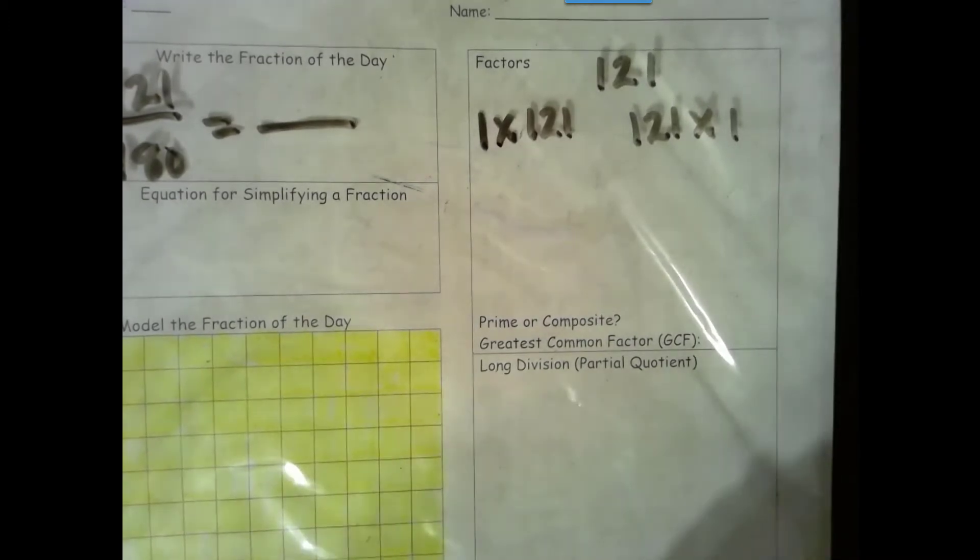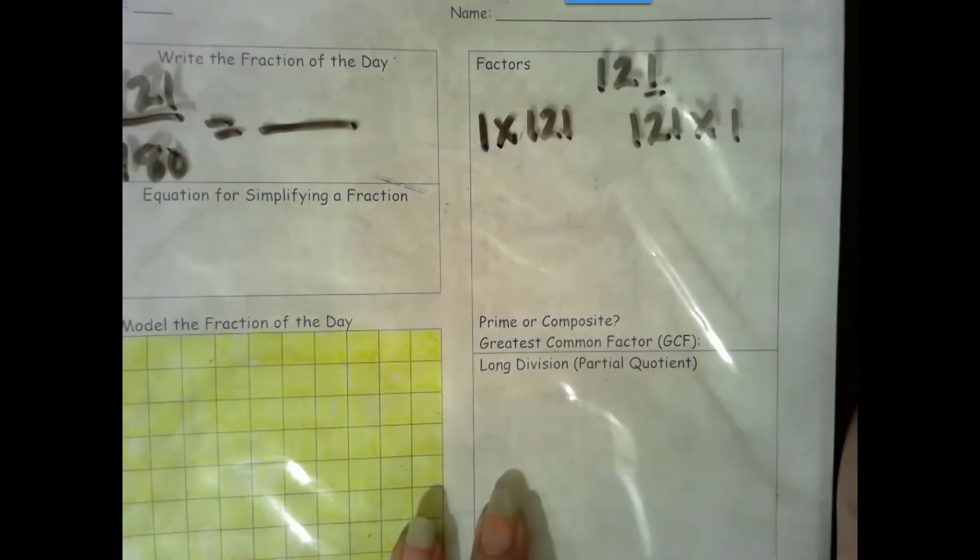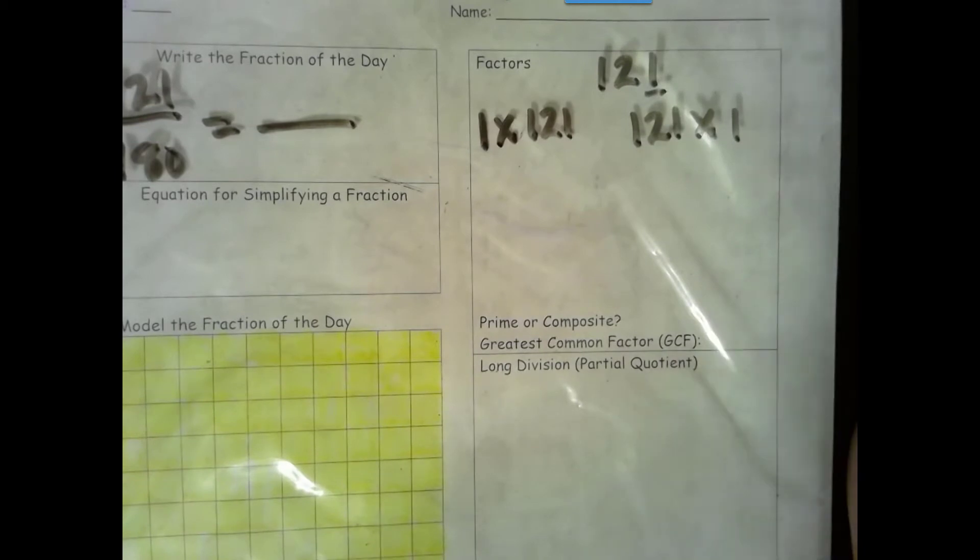Now we're going to go through our divisibility rules, and we're going to go in order so we don't miss any. So after we try 2, the rule for 2 is that it ends in an even number. 1 is odd, so 2 is not a factor. And if 2 is not a factor, no even number will be. So we just need to try our odd numbers.